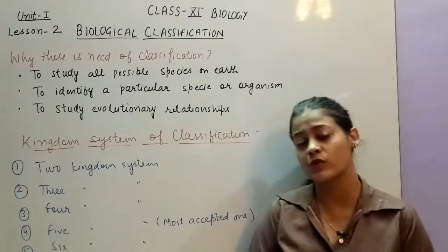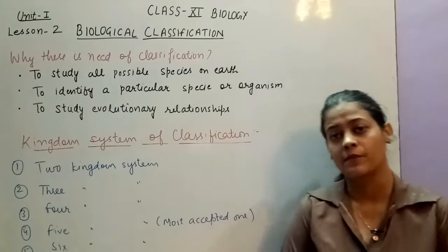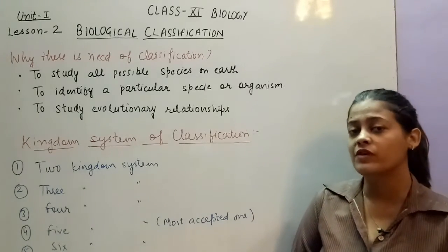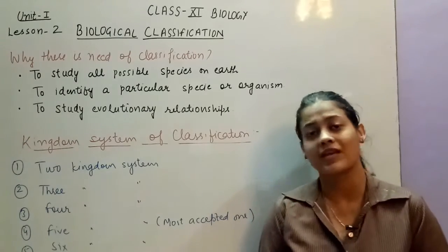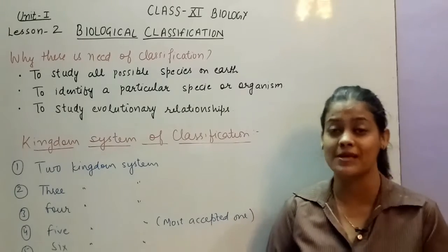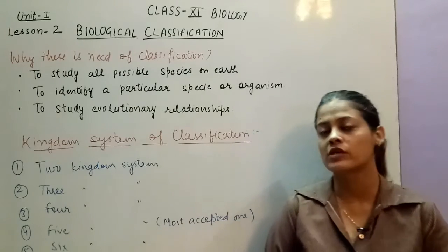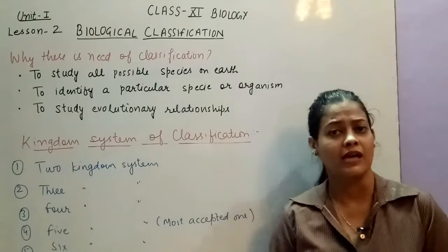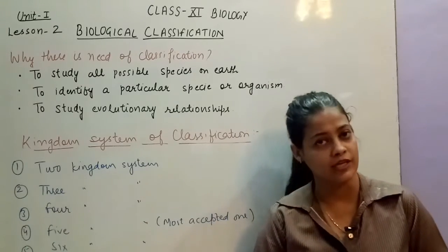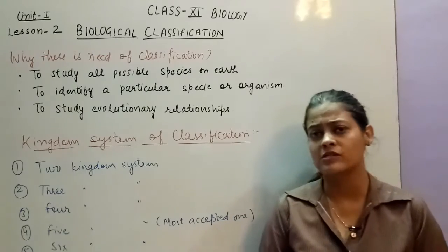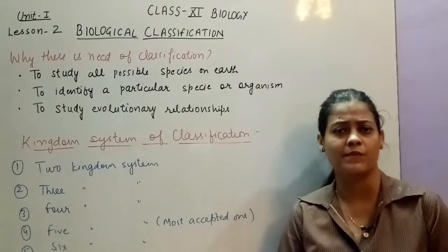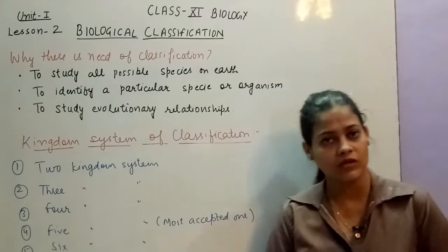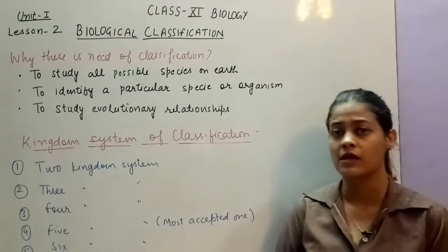You also discussed the hierarchy — when we study different organisms it is not easy to study them separately and individually. So we studied the hierarchy: species, genus, family, order, class — in this sequence the hierarchy was studied. And what else was there: herbarium, zoological parks, botanical gardens — these were the means of how you can conserve the diversity. So all of this you studied in that chapter.